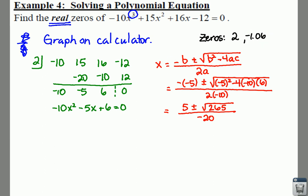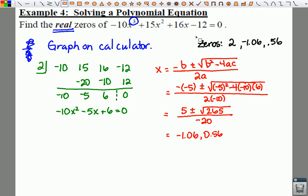And then if you type in 5 minus the square root of 265 all divided by -20, you should get your other answer, and your other answer is going to end up being 0.56. So be careful with your calculator. And yes, it does give you a lot of nice answers, but you also need to know how to use it correctly. So here would be your zeros for Example 4.